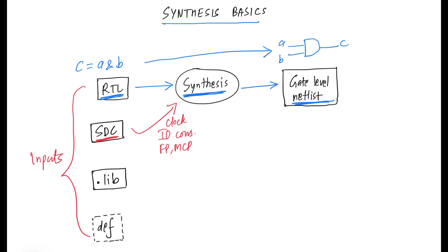Another most important input for the synthesis is the .libs or the standard cell libraries. The .libs have the information on all the cells which are available to us for use on a particular technology node. So for example, while converting this statement into an AND gate, the synthesis tool will pick up an AND gate which is defined in the .libs.